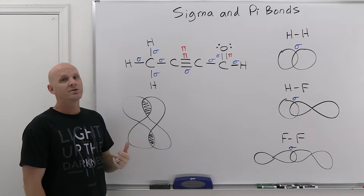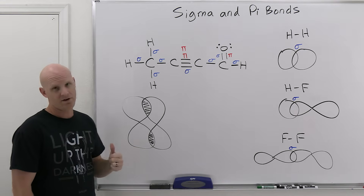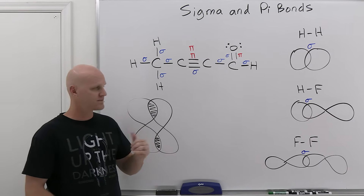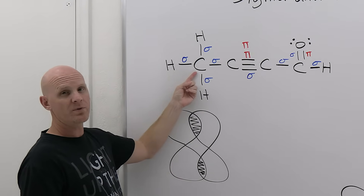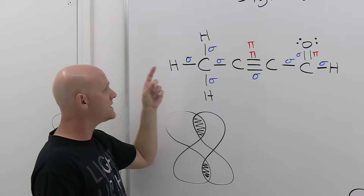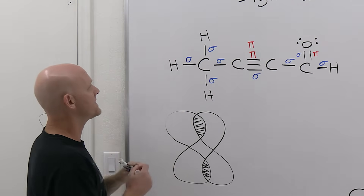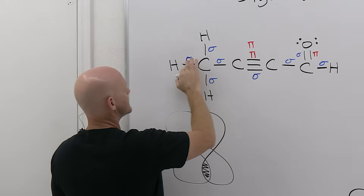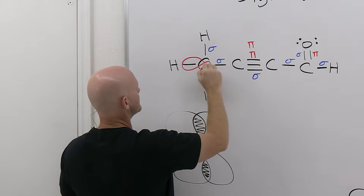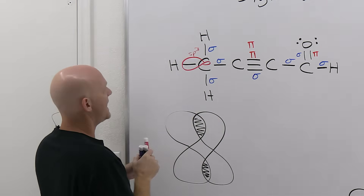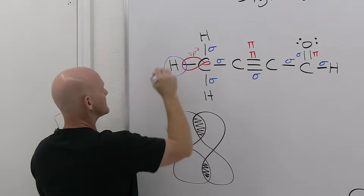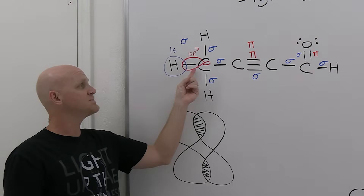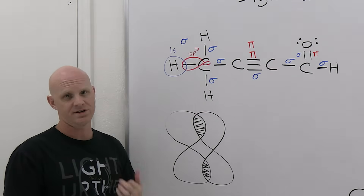If they ask what orbitals are overlapping to make the sigma bonds, that's a harder question. With sigma bonds, if an atom is hybridized, it will be using one of its hybrid orbitals. For example, this carbon has one, two, three, four electron domains, so it's sp3 hybridized — meaning it has an sp3 hybrid orbital pointing towards every atom it's bonded to. For the bond to the hydrogen on the left, the carbon contributes an sp3 hybrid orbital, and hydrogen simply has an unpaired electron in a 1s orbital. So those are the orbitals overlapping to make that sigma bond: an sp3 hybrid from carbon and a 1s orbital from hydrogen.